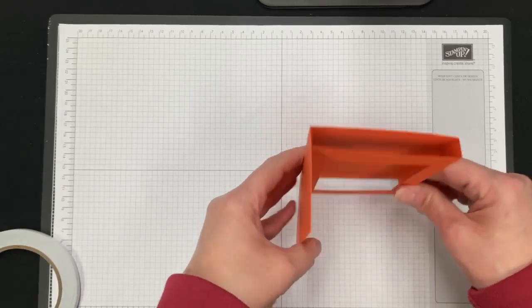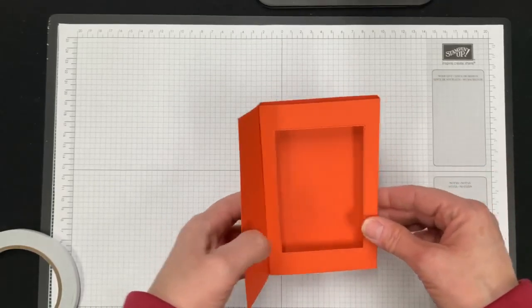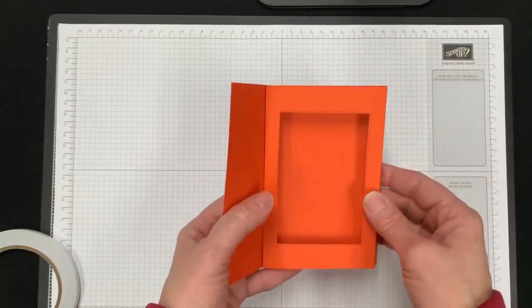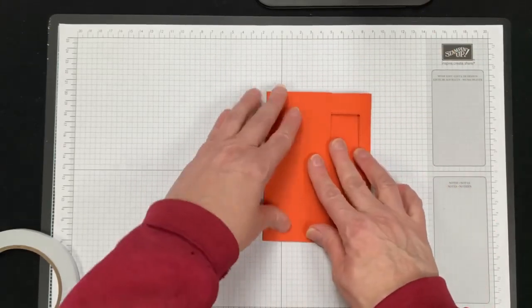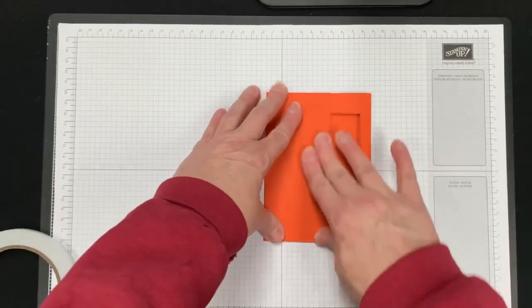And then when you open it, that piece is automatically attached to make your shadow box. Then, like I said, you would have your white piece on the inside. You would do all your decorating as you see fit. Then this folds over like this, and when you go to send it, it lays flat.